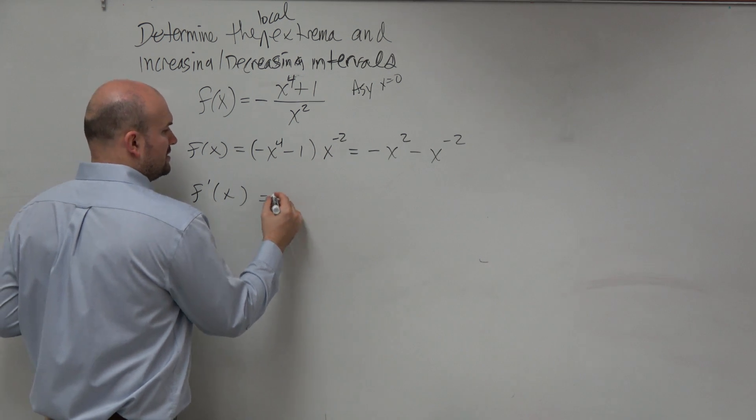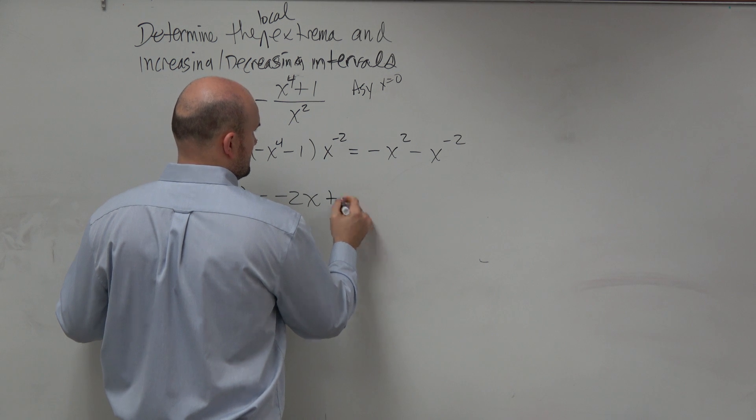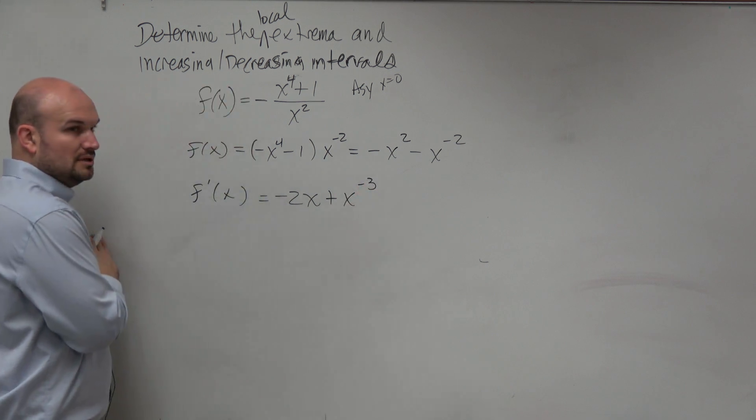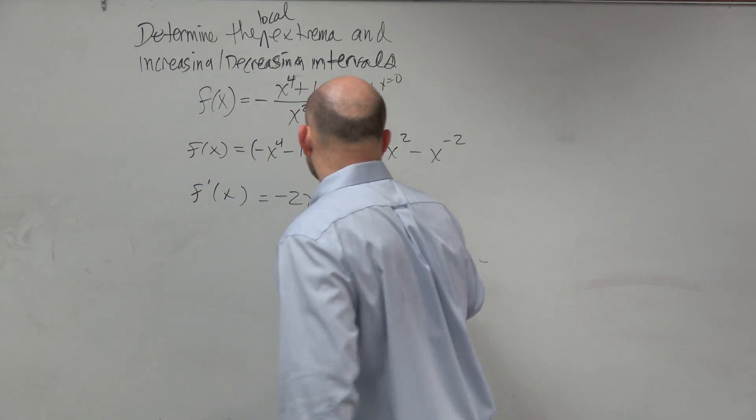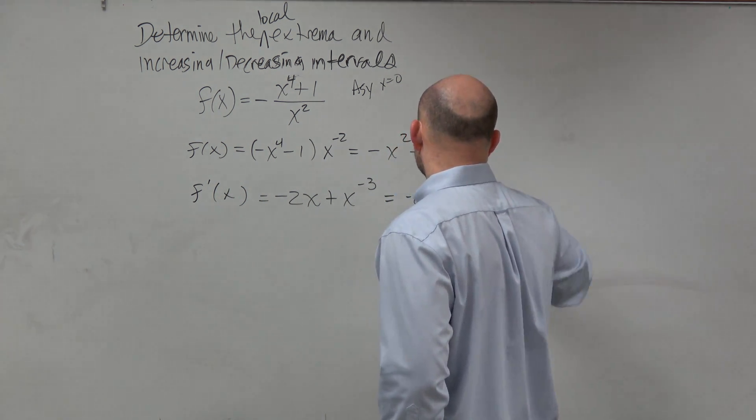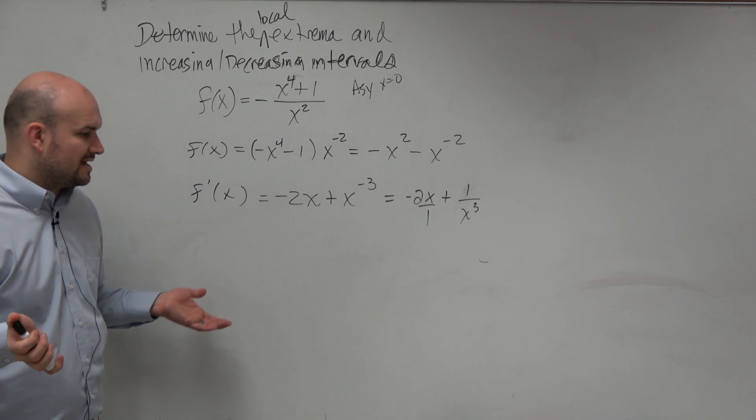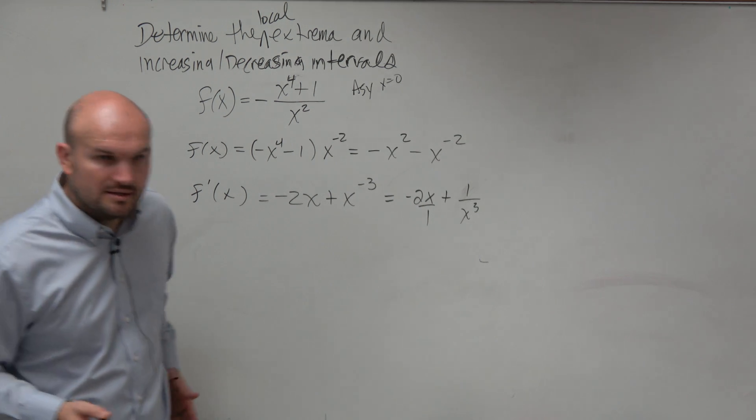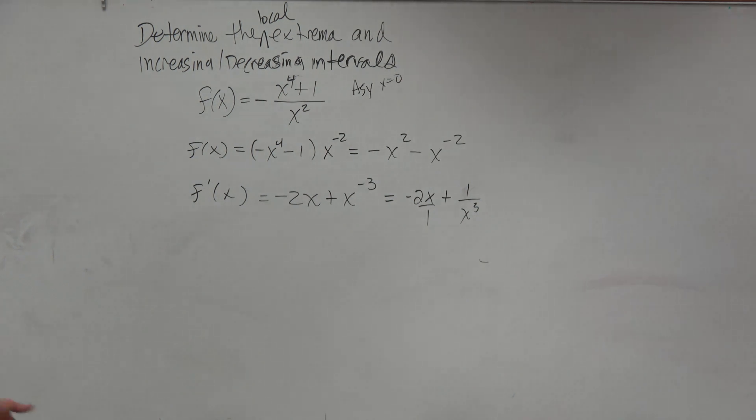Into my derivative. So I have a negative 2x plus x to the negative third. Which I could rewrite as negative 2x plus 1 over x cubed. If I want to get common denominators, my common denominator is going to be x cubed.